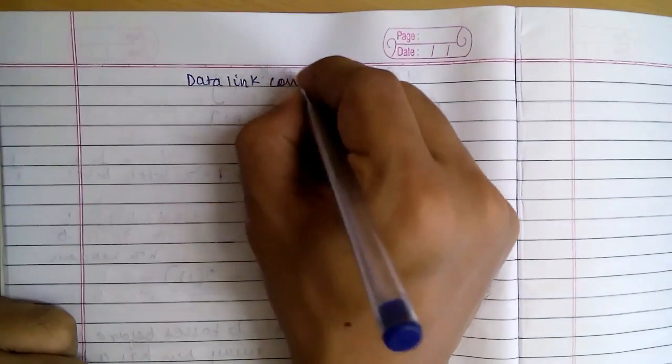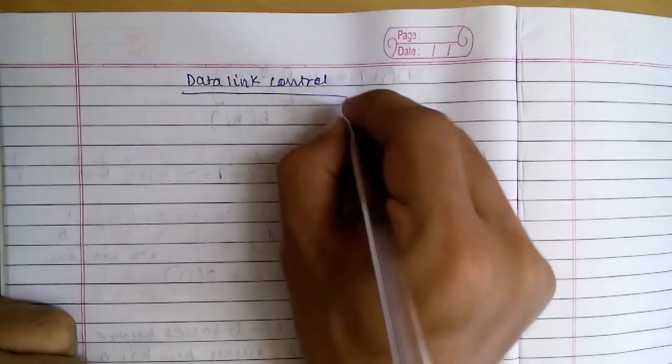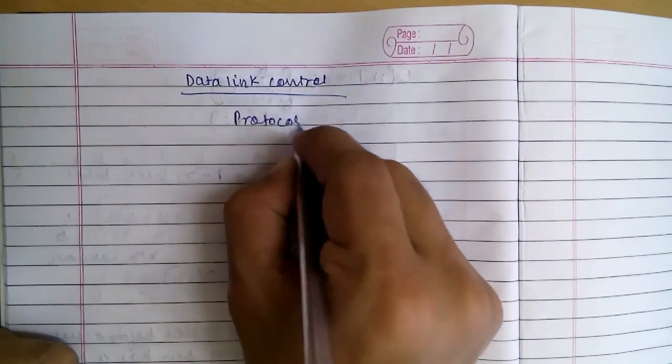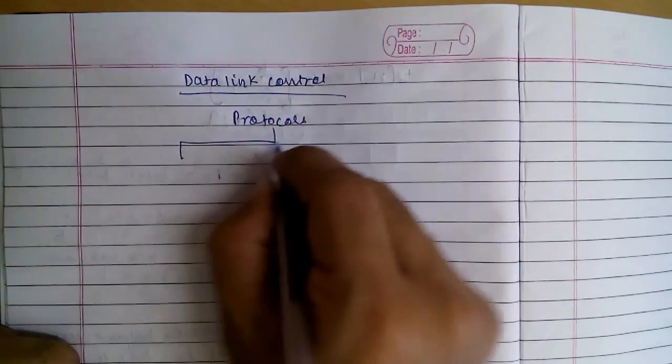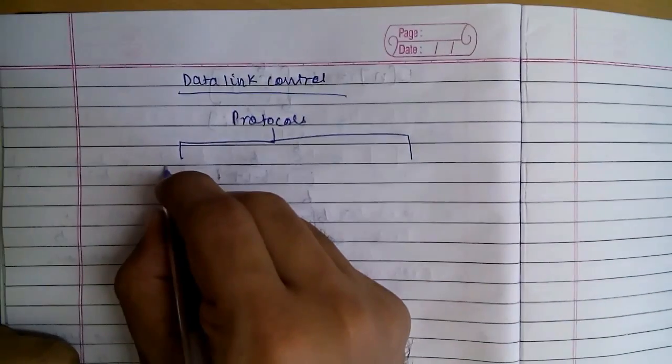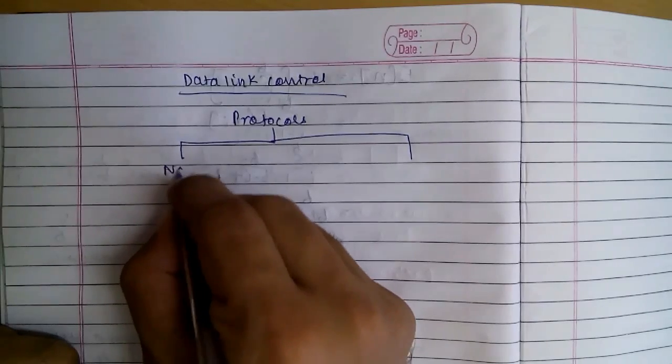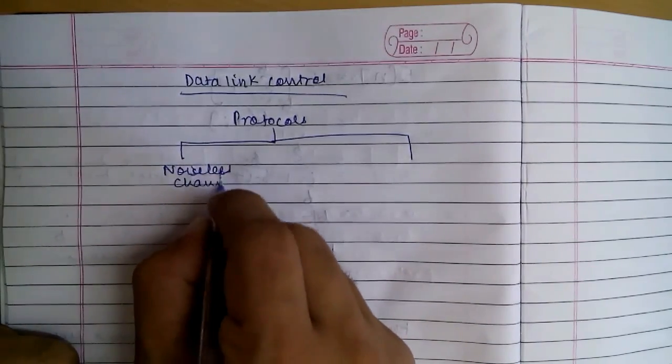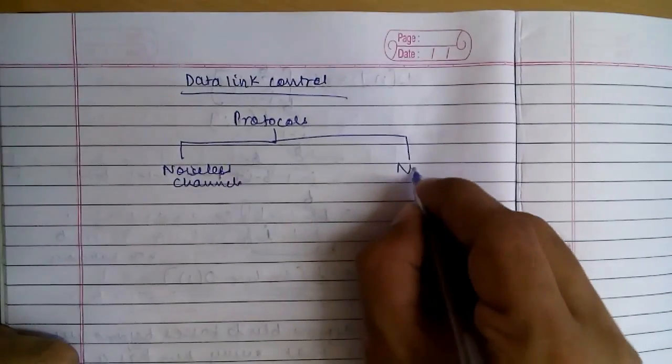In data link control many protocols are used and the protocols can be assumed to be working in noiseless channels and noisy channels.